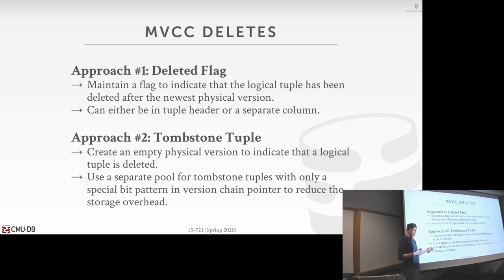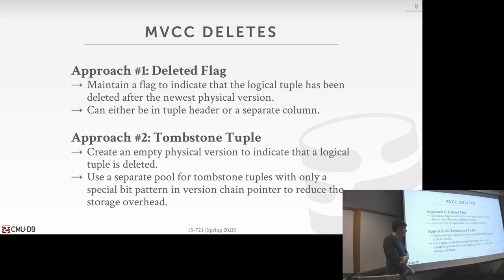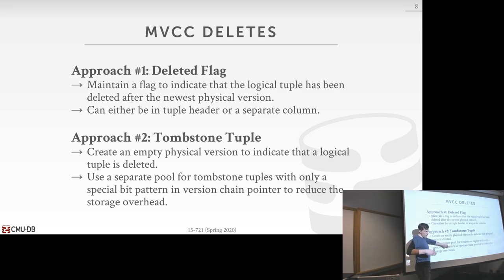In Peloton, our older system, we used a special tombstone pool because we were doing append-only like Hekaton — putting a tombstone in the same data table would have been a big waste of space. In the newer system, we use a separate column as a deleted flag. The tombstone approach is only really an issue if you're doing append-only storage. If you're doing delta store with newest-to-oldest, you just store the deletion flag in the header of that tuple.